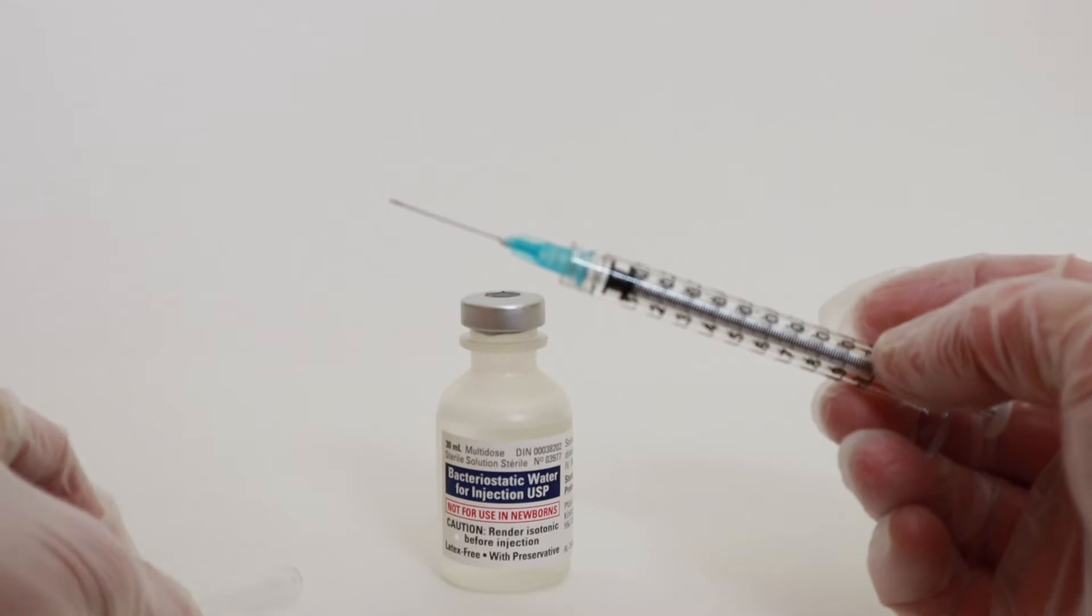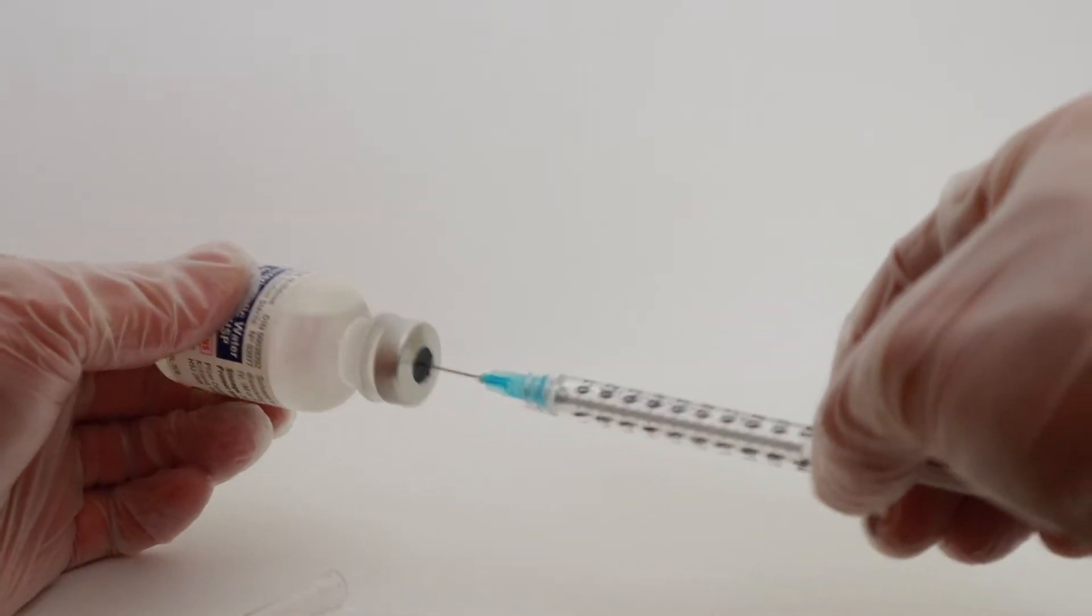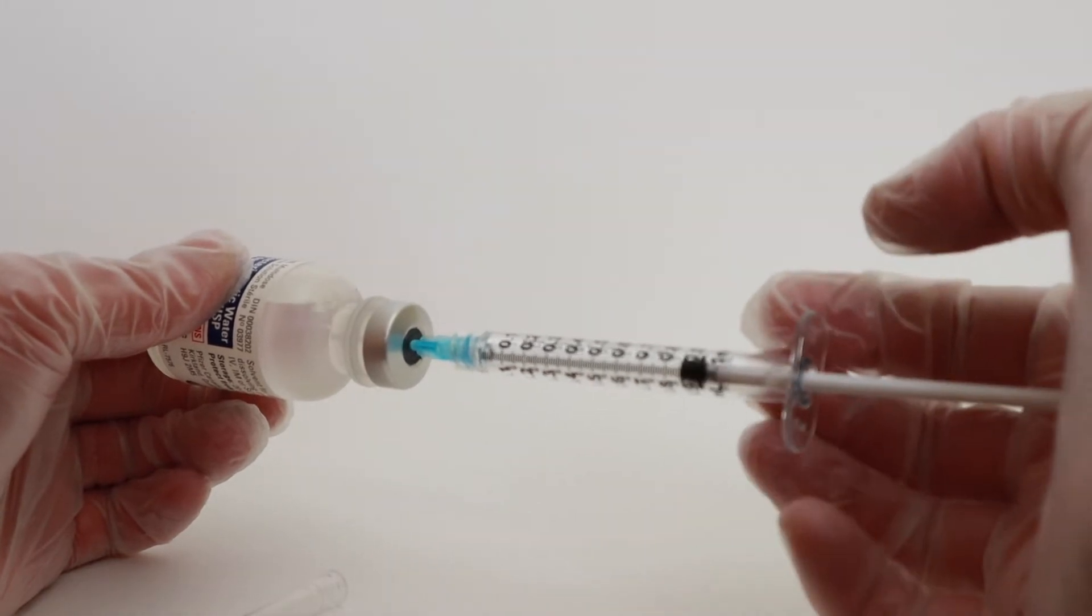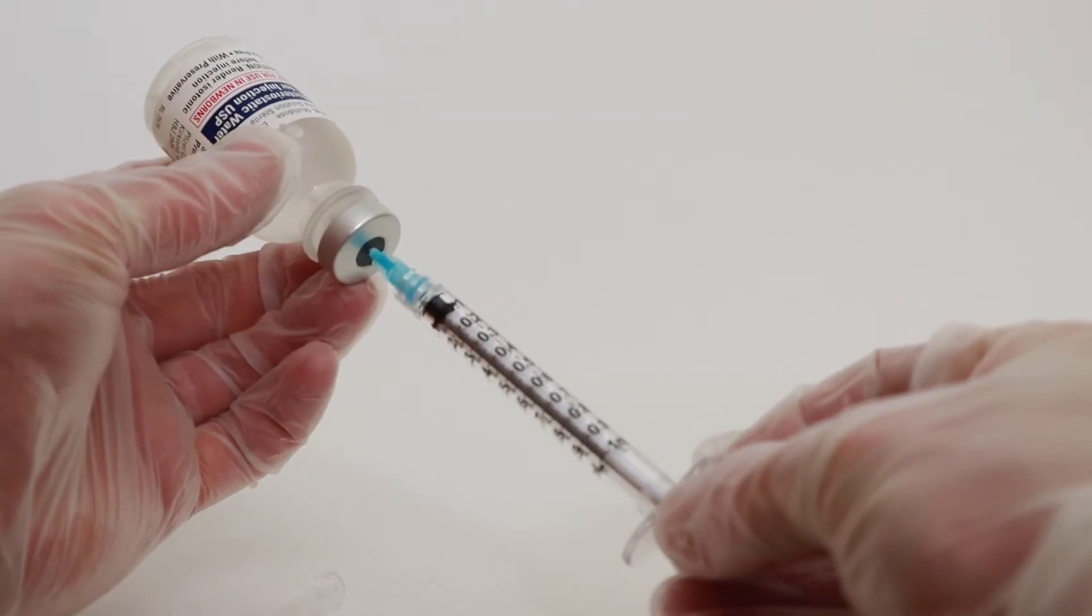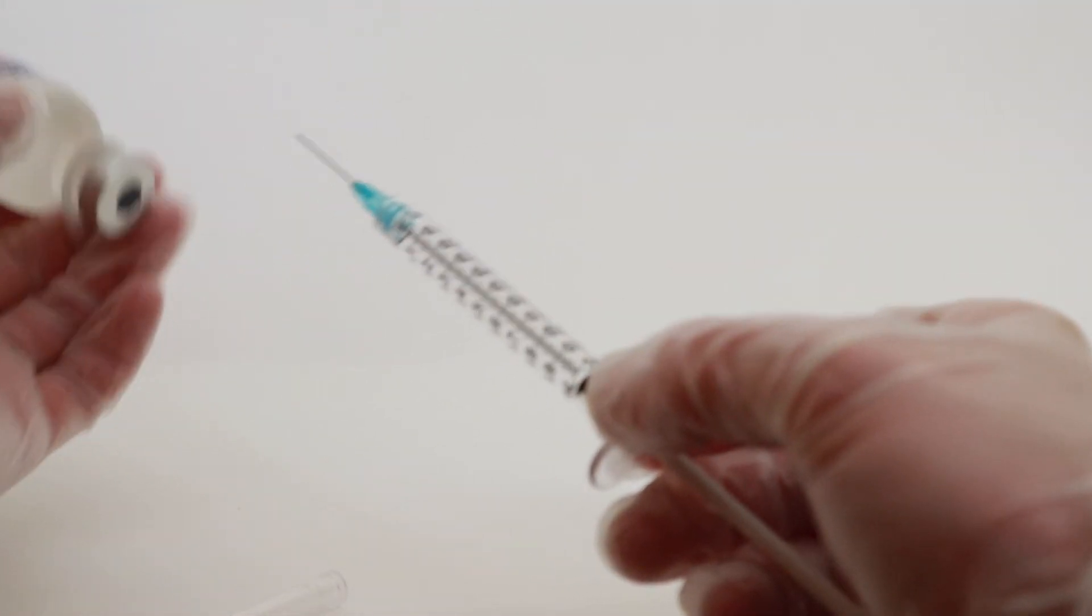We're going to use the mixing syringe and get a full syringe of bacteriostatic water equaling 1 ml. Push some air into the bottle to create pressure and slowly take out the bacteriostatic water.